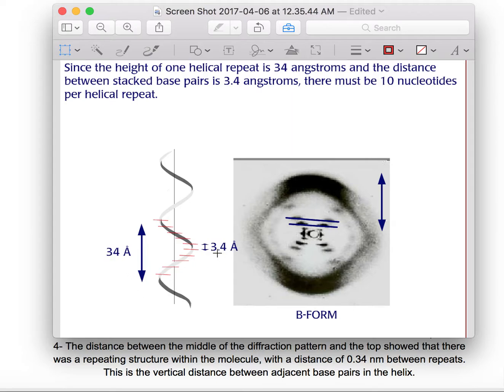If you multiply 0.34 by 10, or 3.4 angstroms by 10, you're going to get 34 angstroms, or 3.4 nanometers.